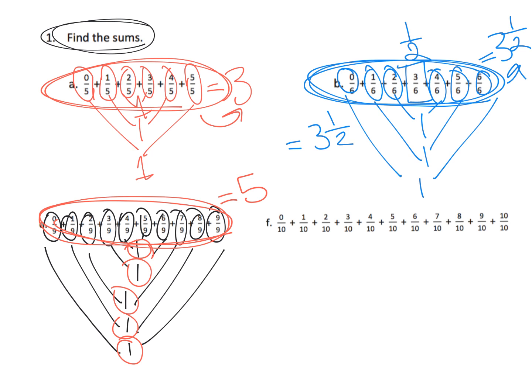And, lastly, let's do it in purple. So, zero-ninths plus ten-ninths, that's one. One-ninth plus nine-ninths, that's one. Two-ninths plus eight-ninths, that's one. Three-ninths plus seven-ninths, that's one.